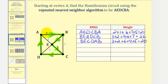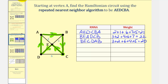Moving to vertex C: the nearest vertex is E since edge CE has a weight of 2. From E, the nearest vertex is D with a weight of 1. From D we must visit A, then B, then back to C. The circuit is CEDABC with a weight of 2 + 1 + 4 + 5 + 7 = 19.